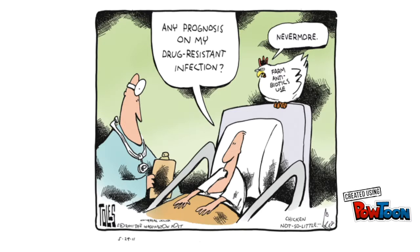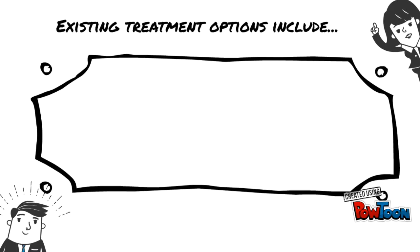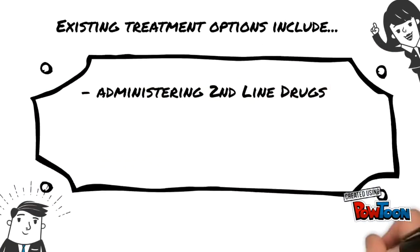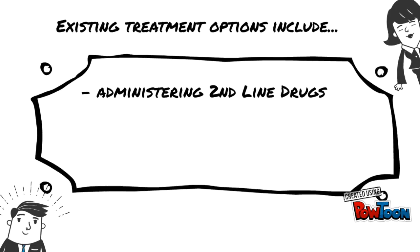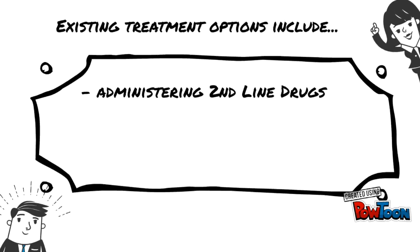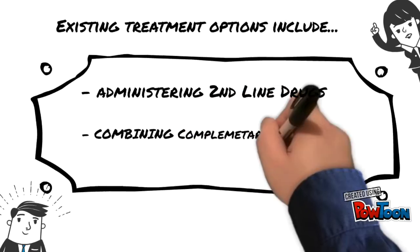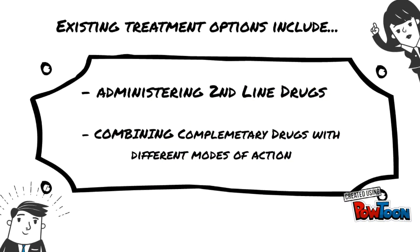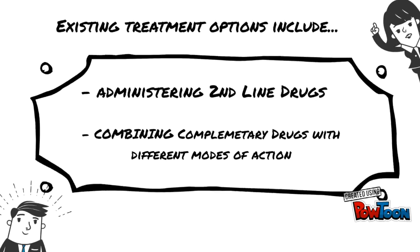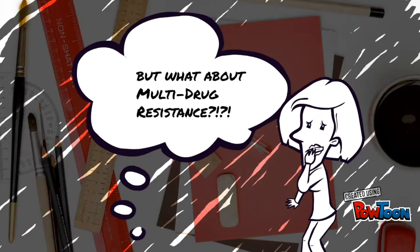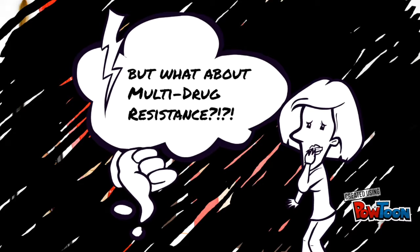When contracted, treating and curing drug-resistant TB is complicated, and inappropriate management can have life-threatening results. Existing treatment options involve administering second-line or reserve medications, which are generally more costly, have greater side effects, and are required to be taken for a greater length of time. Another option is the use of complementary first-line drugs that treat infection at different stages of the replication cycle. Unfortunately, this has led to the development of multi-drug and extensively drug-resistant strains of TB. At best, current treatment options are costly and ineffective; at worst, they are potentially lethal.